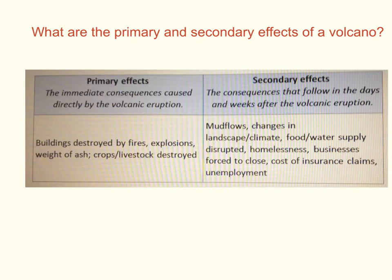We need to consider what primary and secondary effects of a volcanic eruption can result in. Here we have a general table detailing the primary and secondary effects. Primary effects are defined as the immediate consequences caused directly by the volcanic eruption, and they include buildings being destroyed by fires, explosions, the weight of ash, and crops and livestock being destroyed.